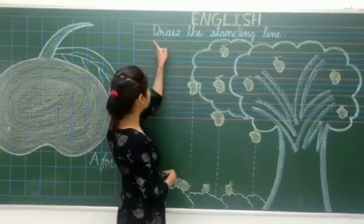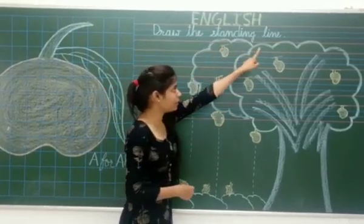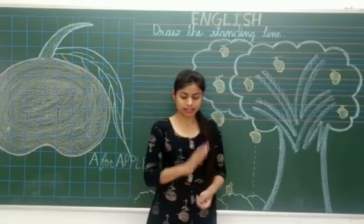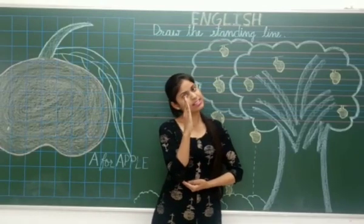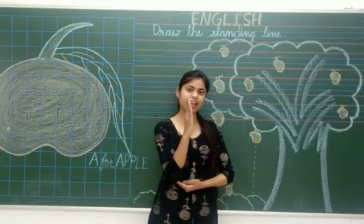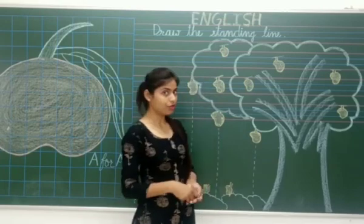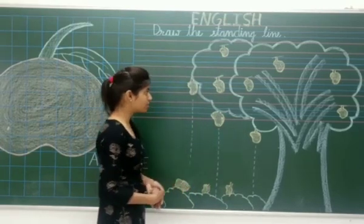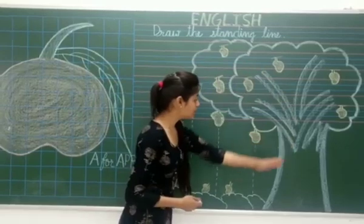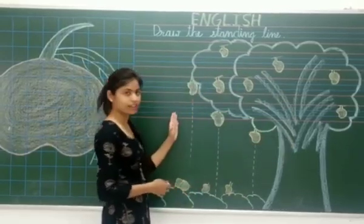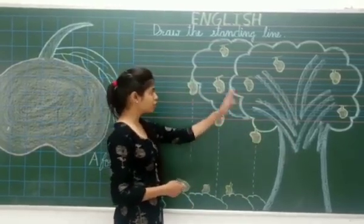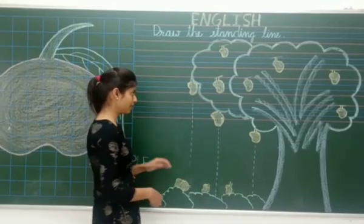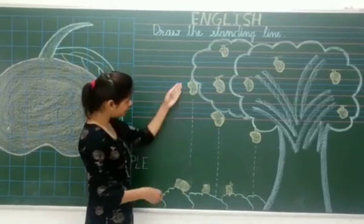Draw the standing line. What is the standing line? This is the standing line. Now we will make the standing line. But first, which picture is this? This is a tree — a mango tree. Now, standing line.